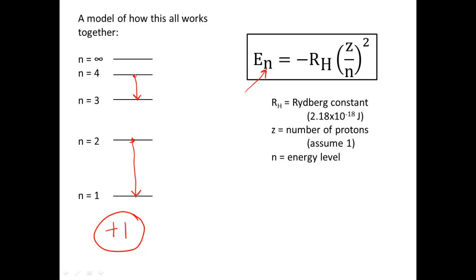If we wanted to know what kind of light we would get from each of these individual drops in energy levels that the electron can perform, we can calculate the amount of energy. If we take the gap between n equals 2 and n equals 1, we can calculate the energy the electron has in each level. When it jumps down, the amount of energy it needs to give off is the difference in energies between these energy levels. This photon that it releases has the equivalent energy as that difference, and each different photon energy will have its own unique color.